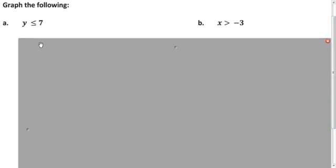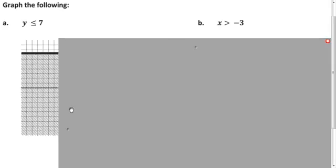So, in letter A, we only have the variable Y, so it's going to be a horizontal line. Now, Y is less than or equal to 7, so since it could be equal to 7, we include the points on the line. Less than 7, we shade down.